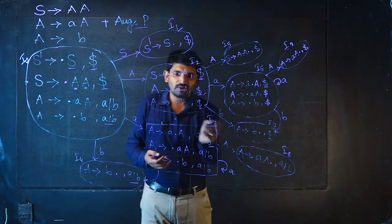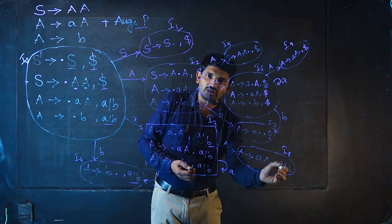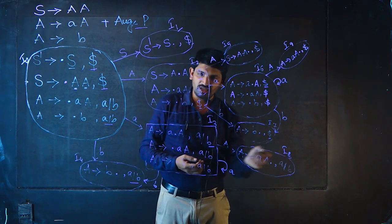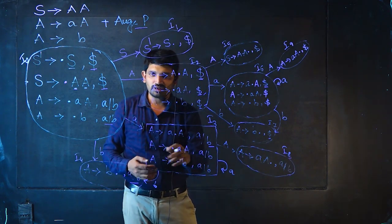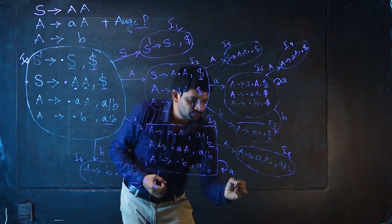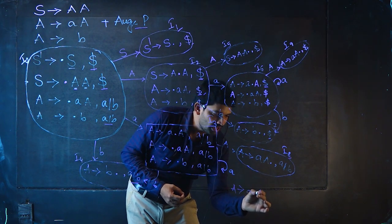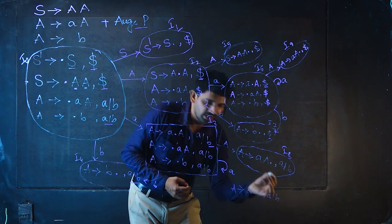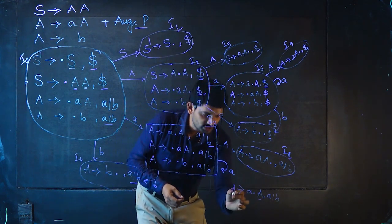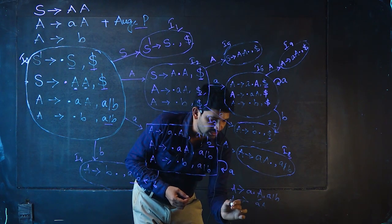This is the LR 1 canonical item set. After constructing it, we build the parse table. The parse table has two parts: the action part and the goto part. In the action part, we include all terminal symbols from the grammar including dollar. In the goto part, we place all non-terminal symbols. In the first column, we list all states constructed in the LR 1 canonical items.